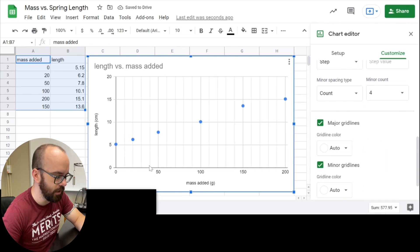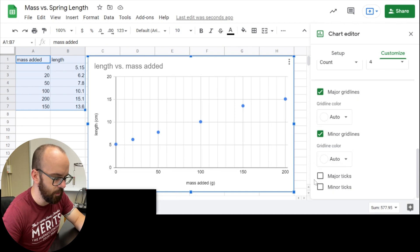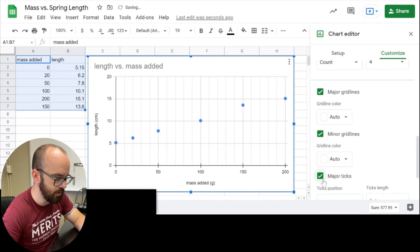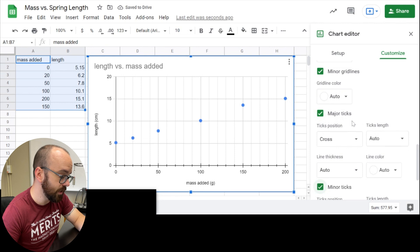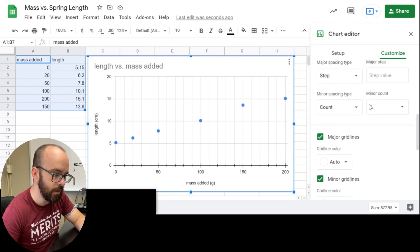I can do the same thing for the vertical and I could add some major ticks and some minor ticks. I could do some things that make the graph a little bit nicer, but I'm really interested in the best fit line here. So let me do this. I'm going to go on here to series and then under series, I'm going to go down to trend line.